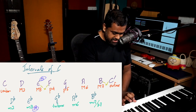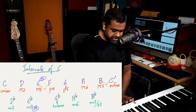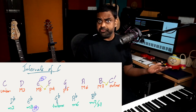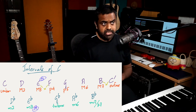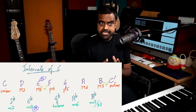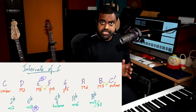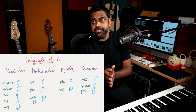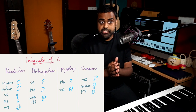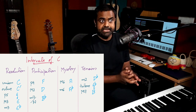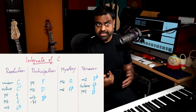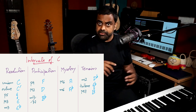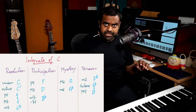If you take the note C, we're going to develop all its intervals. A great way to start off is to categorize intervals into those which are very stable — what we call resolutions — then move into intervals which want to come back to stability, which we call anticipations. Then you can practice the tensions and mysteries and all the fancier intervals.